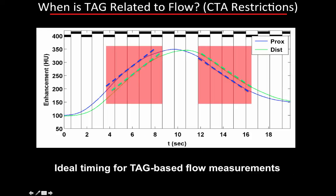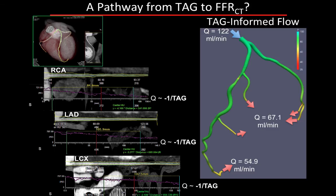As for when this model holds: the intrinsic assumption is that contrast inflow increase leading up to the CTA was fairly constant. This only holds during the upslope—and also the downslope—of the contrast passage curve. So you need to perform your CTA at the right time in order to be able to extract information about flow using TAG.